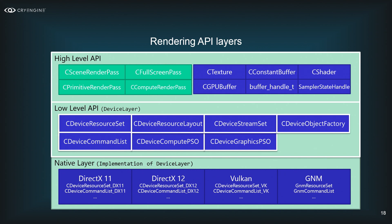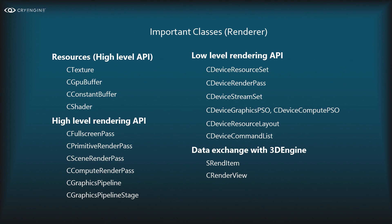The important classes in the hierarchy: resources include CTexture, CGPUBuffer, constant buffer, and CShader. The high-level rendering API has full screen pass, primitive pass, scene render pass, and compute render pass. Above those is the graphics pipeline with graphics pipeline stages. At the lower level: resource sets, render passes (collection of render targets and depth targets), device stream sets, pipeline states, resource layout, and command list. For exchanging data with the 3D engine: SRenderItem and the render view itself.